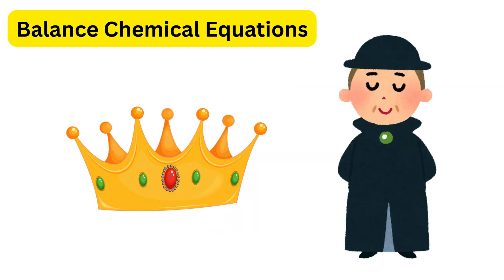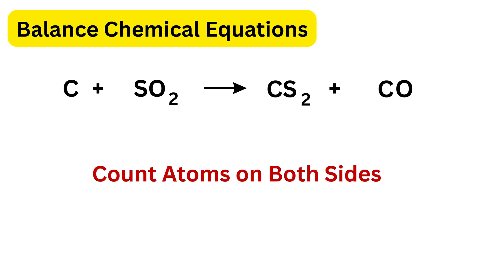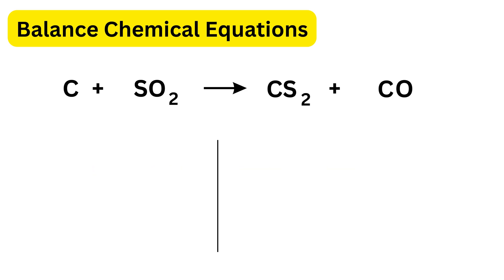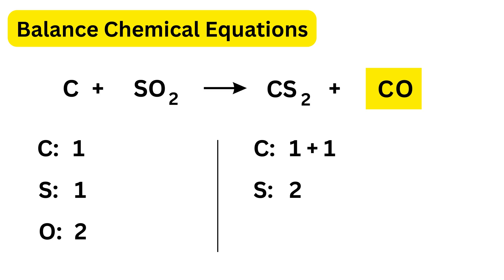Finally, a difficult problem to become a pro at balancing equations. The unbalanced equation is: carbon plus sulfur dioxide gives carbon disulfide plus carbon monoxide. On the left: one carbon (no subscript), and SO₂ meaning one sulfur and two oxygens — totaling one carbon, one sulfur, and two oxygens. On the right: CS₂ has one carbon and two sulfurs; CO has one carbon and one oxygen — totaling two carbons, two sulfurs, and one oxygen.